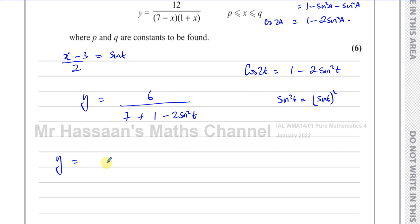So basically now I can replace this sine squared T with X minus 3 over 2 all squared. So I can say Y is equal to 6 over 7 plus 1 minus 2 times X minus 3 over 2 squared.